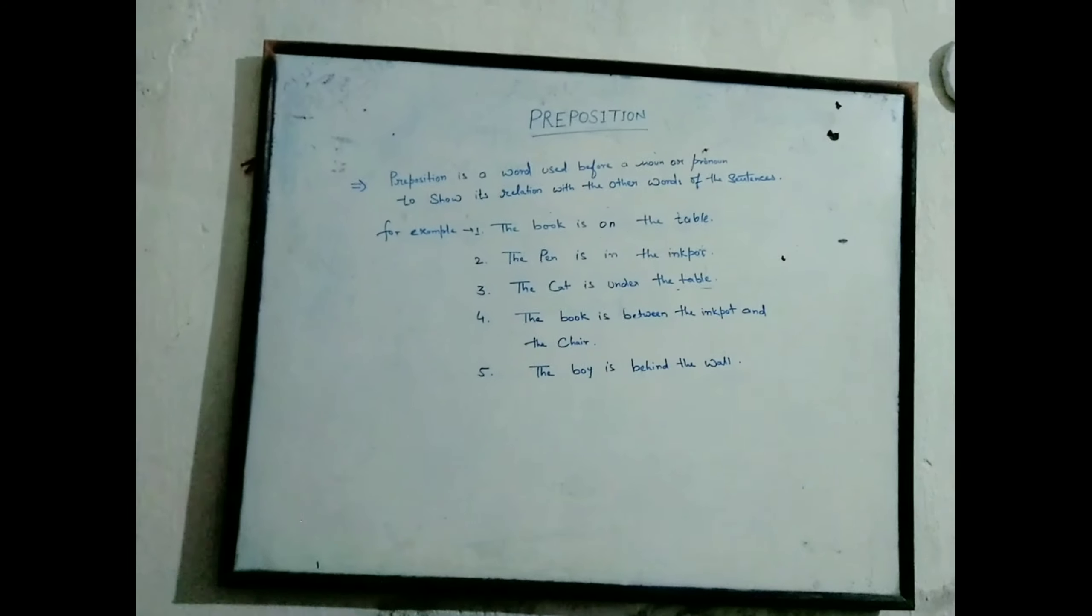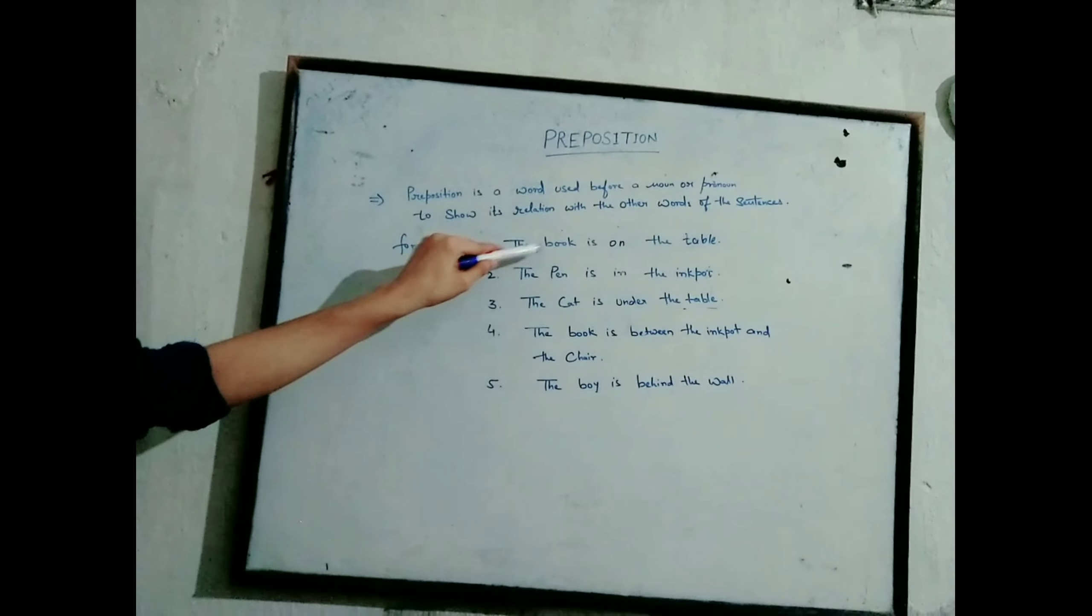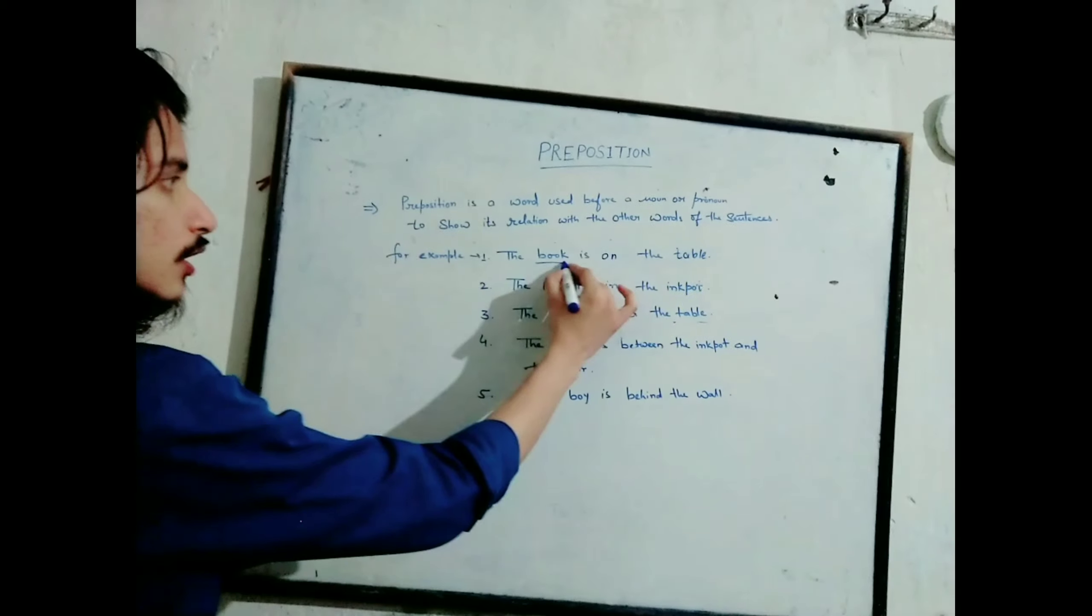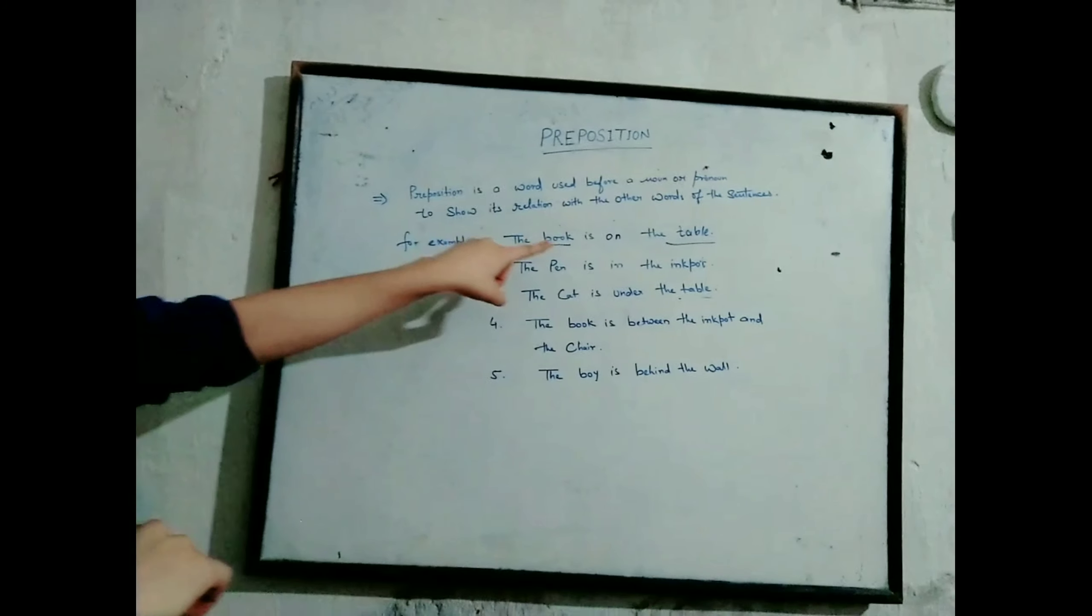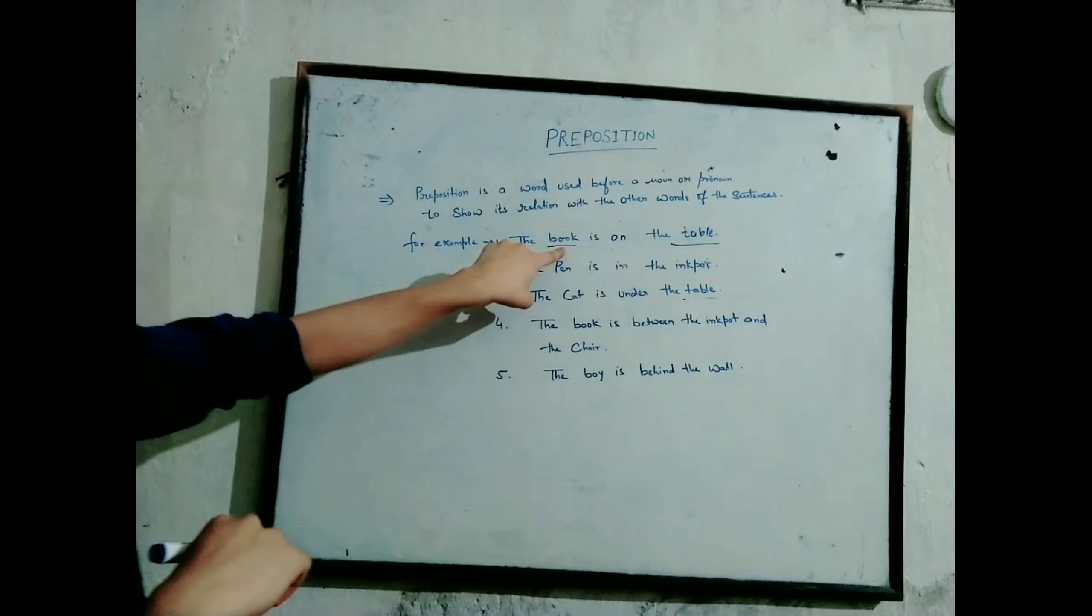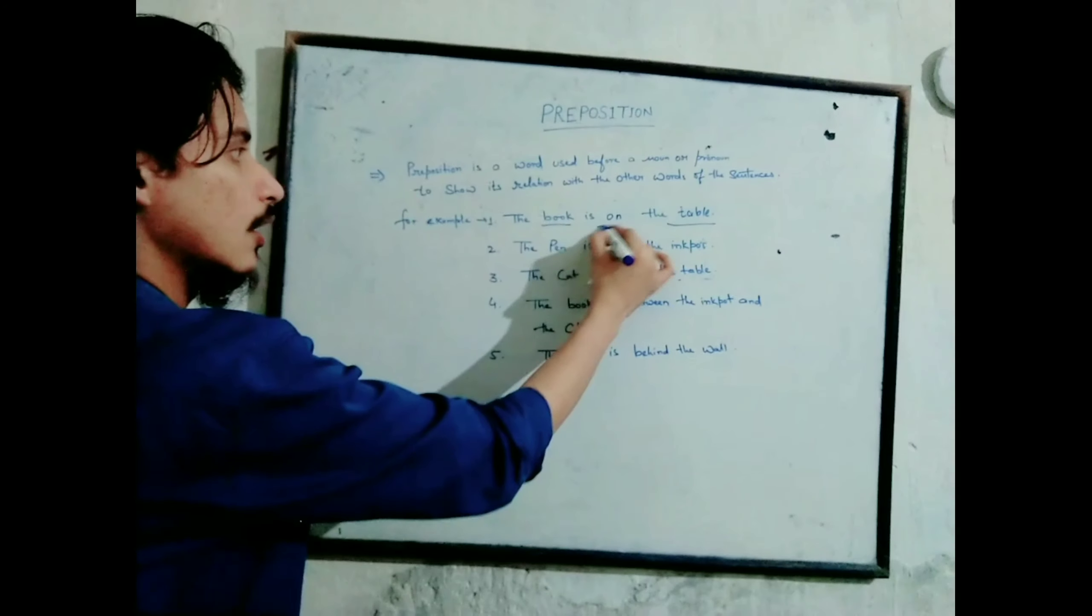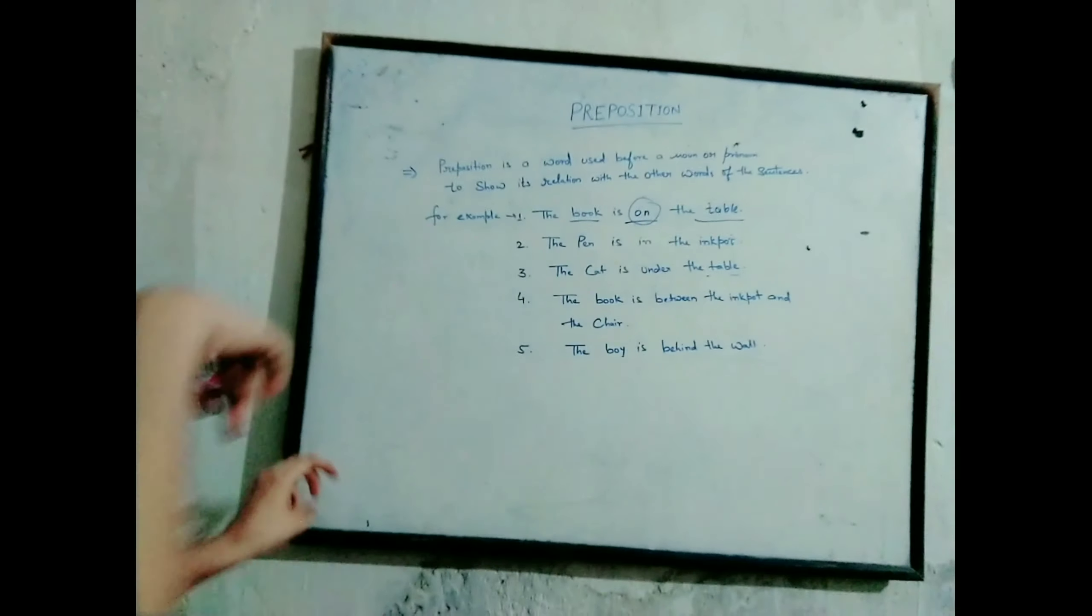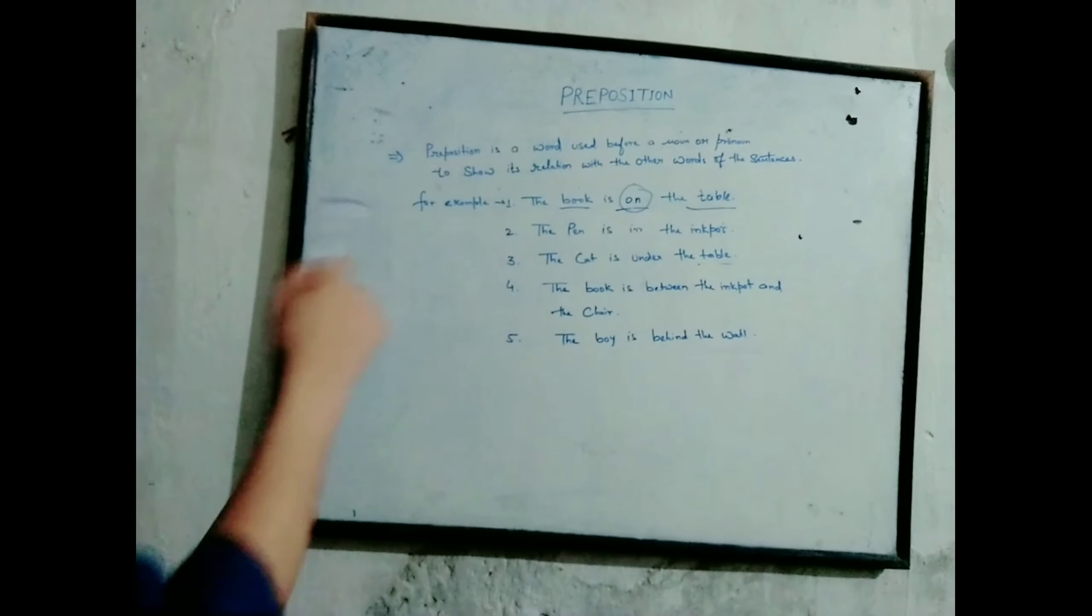Let me take an example like, the book is on the table. In this sentence there are two words, book and table. There is a relation between book and table, and that relation is shown by 'on'. 'On' helps us show the relation between these two words, so 'on' is a preposition.